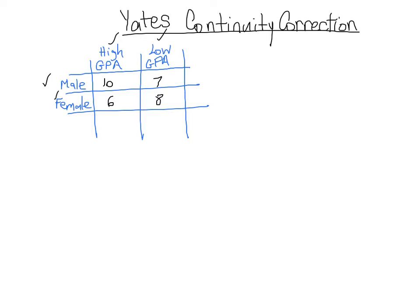So the formula to use the Yates continuity correction is chi-squared corrected by Yates equals the sum of fo minus fe minus 0.5—so that's where the change comes in—squared, all over fe.